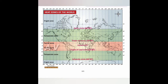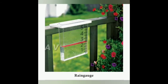Rainfall is liquid water in the form of droplets that have condensed from atmospheric water vapor and become heavy enough to fall under gravity. Without rainfall, human life and any other creature's life is not possible. Generally, rainfall is high in the equatorial region and decreases gradually towards the poles. Rainfall is measured by a rain gauge.